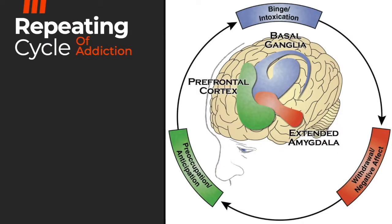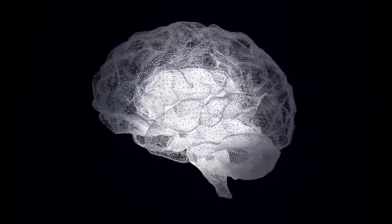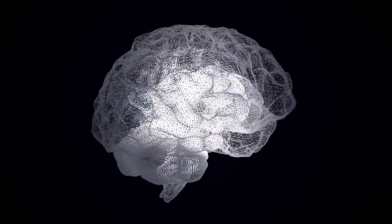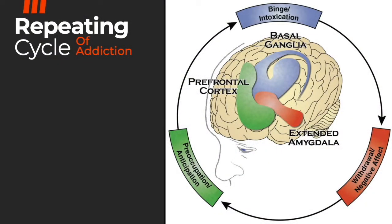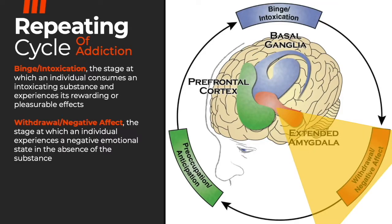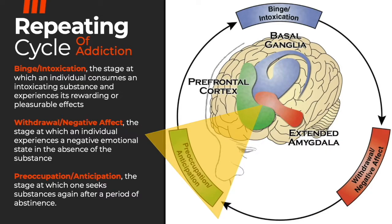Addiction can be described as a repeating cycle with three stages. Each stage is significantly associated with one of the brain regions. The three stages are: binge or intoxication — the stage at which an individual consumes an intoxicating substance and experiences its rewarding or pleasurable effects; withdrawal or negative effect — the stage at which an individual experiences a negative emotional state in the absence of a substance; and preoccupation or anticipation — the stage at which one seeks substances again after a period of abstinence.